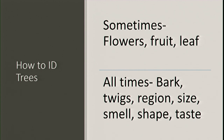How do you go about IDing trees? Sometimes during the year you can use flowers, fruit, and leaf. When those aren't available, you can use bark, twigs, and bud scars — what does the scar look like under the bud when you remove it? I actually have a book all on twig ID. Other tools include the size of the tree, native region, shape, and in some instances, taste.